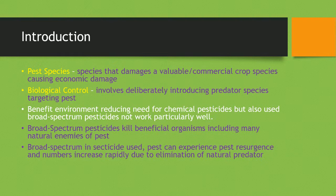Biological control involves deliberately introducing a predator species that targets this pest. This benefits the environment as it reduces the need for chemical pesticides. However, broad spectrum pesticides don't work particularly well — they will kill beneficial organisms, including many natural enemies of the pest, which is a bad thing.